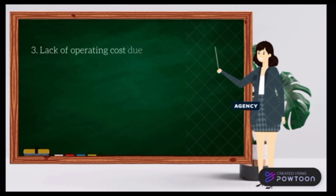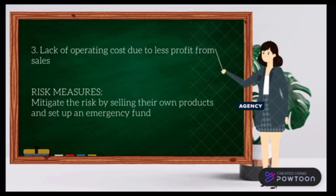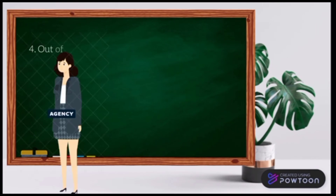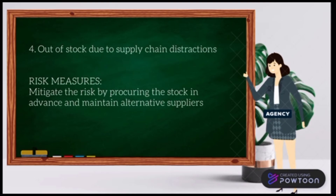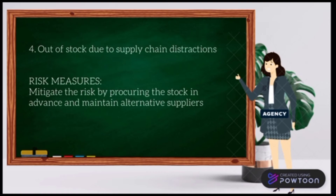Number three — Transfer — lack of operating costs due to less profit from sales. Risk measure: Mitigate the risk by selling their own products and setting up an emergency fund. Number four — Terminate — out-of-stock due to supply chain disruptions. Risk measure: Mitigate the risk by procuring stock in advance and maintaining alternative suppliers.